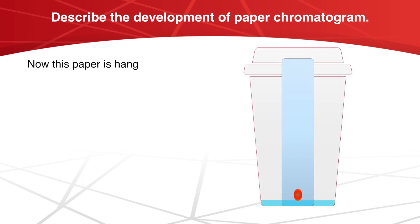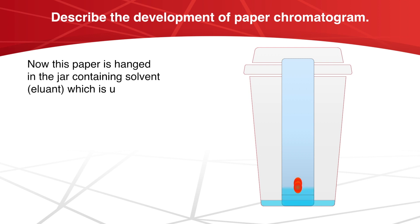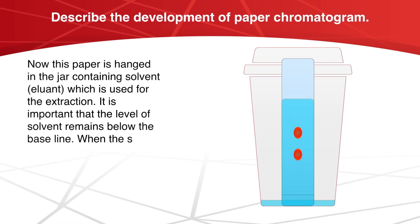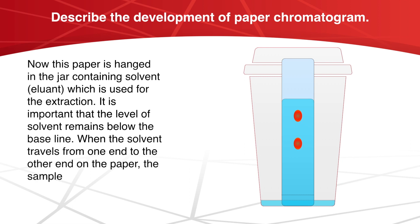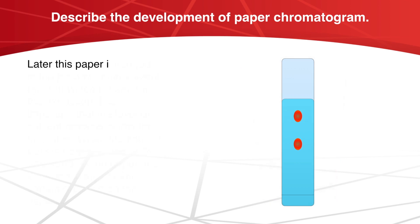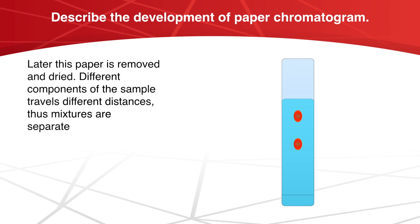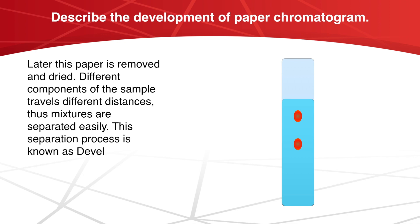This paper is hung in a jar containing solvent or eluant, which is used for the extraction. It is important that the level of solvent remains below the base line. When the solvent travels from one end to the other end of the paper, the sample will also travel a certain distance. Different components of the sample travel different distances, so mixtures are easily separated. This separation process is known as development.